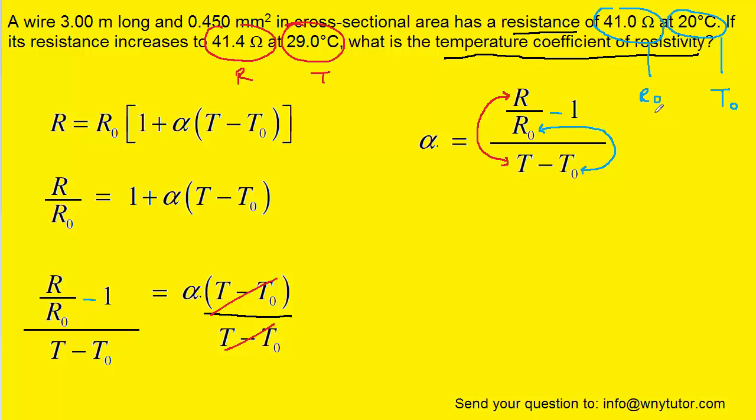So with those values identified we can plug into the equation and solve for alpha. Notice that the ohms in the numerator here and denominator there will cancel out. When you simplify this you should get 1.1 times 10 to the minus 3.